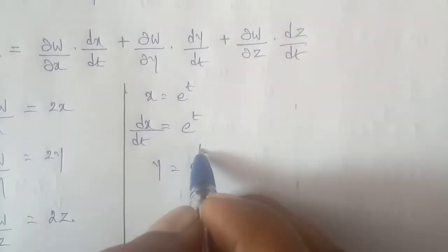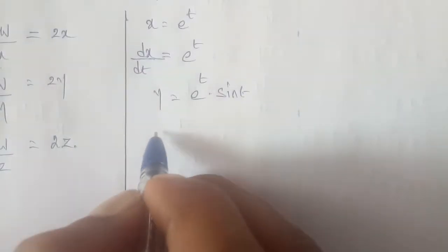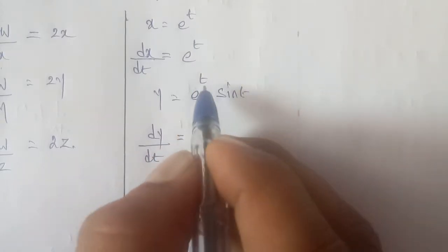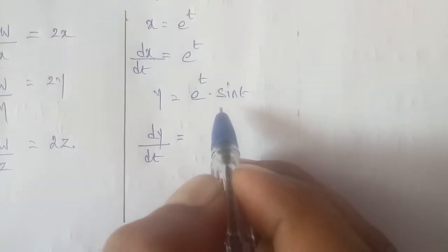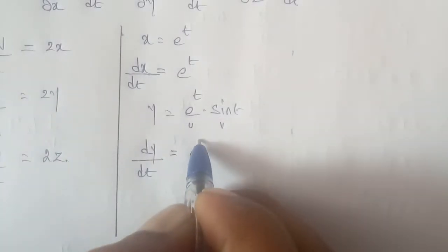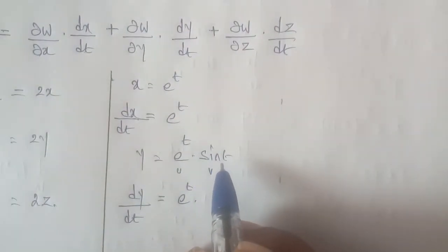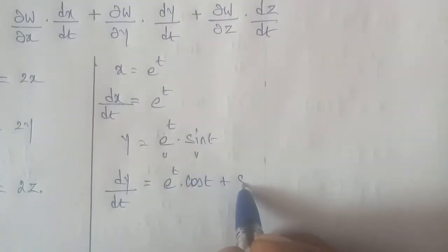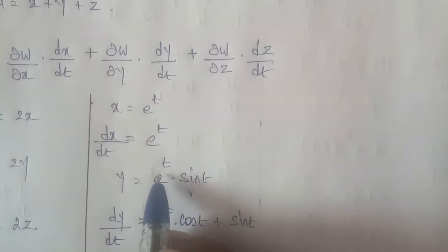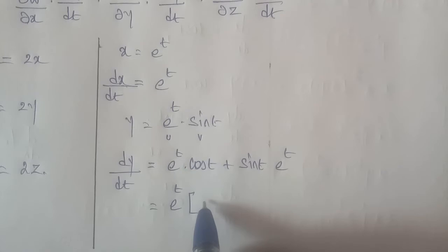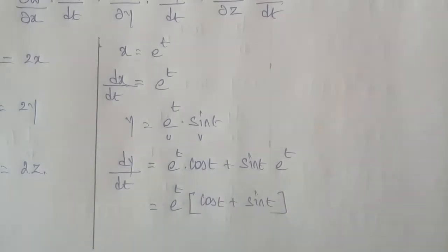For dy/dt: since y = eᵗ sin t, we apply the product (uv) rule. Let u = eᵗ and v = sin t. Then dy/dt = u·(dv/dt) + v·(du/dt) = eᵗ cos t + eᵗ sin t = eᵗ(cos t + sin t).